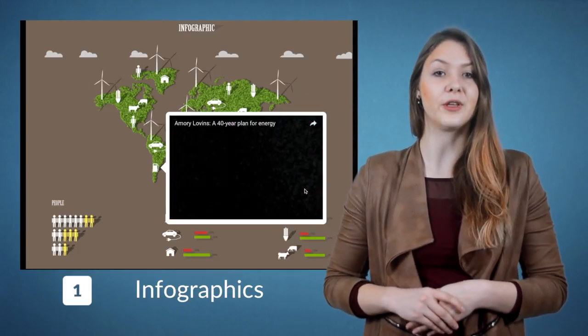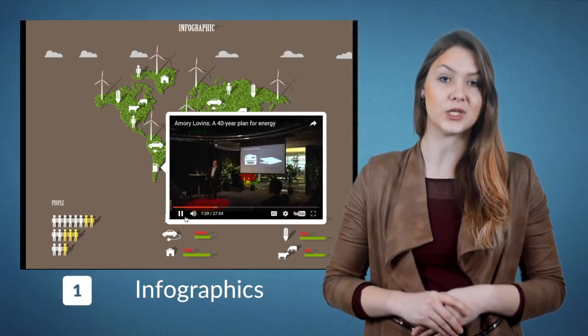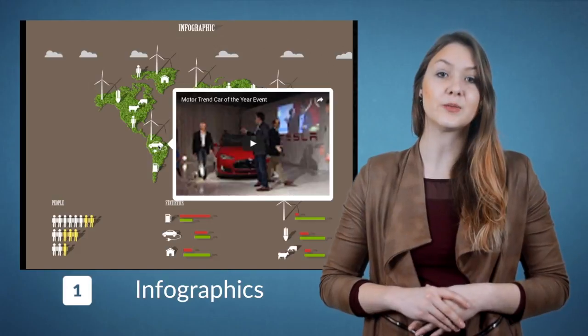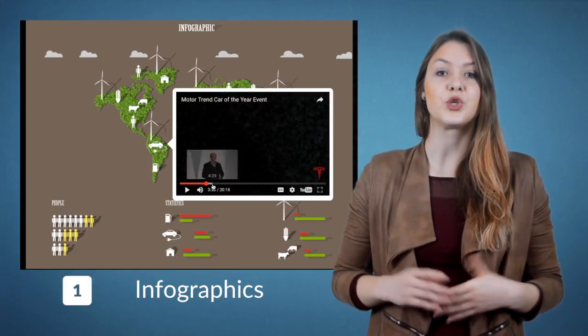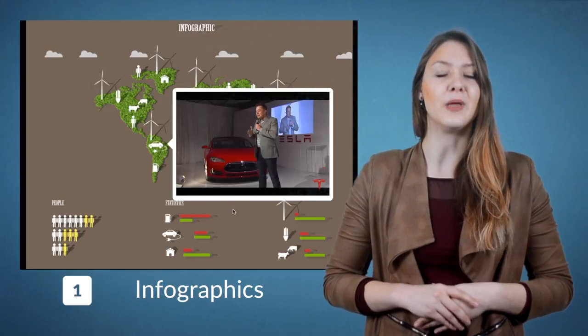Once you have a basic infographic, you can fire up BookWidgets and create a new hotspot widget. You can start adding hotspots on your image. Choose between text, image, video, web or audio. Here's what I mean. Take a look at this example behind me.